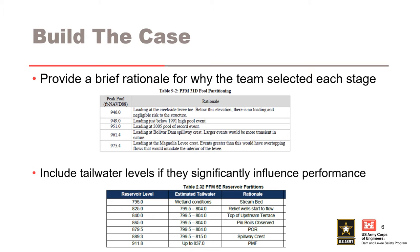As with any node in an event tree, provide the rationale for each loading partition to provide a clear understanding of its significance. The first table is an example of concise rationales for reservoir pool partitioning. If tailwater significantly influences performance, provide its rationale in a similar manner as shown in the bottom table.